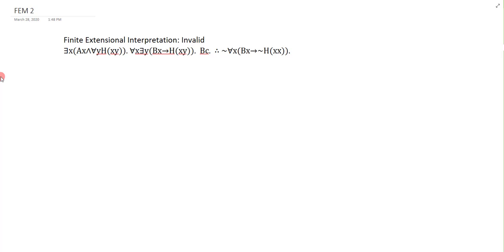In this demo video of a finite extensional model, we'll be constructing an interpretation that renders this argument invalid. Premise 1, the translation of this is pretty straightforward. It's very similar to what we looked at before. The only difference is here the universals are on the inside. It doesn't really matter. I'll focus on the HXY.